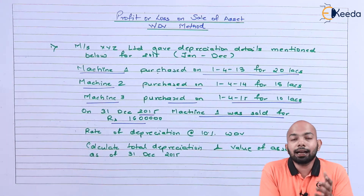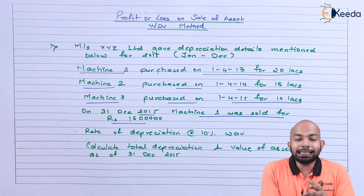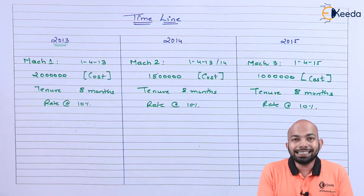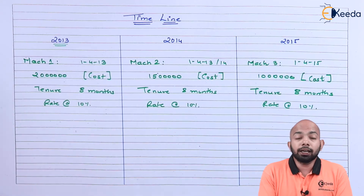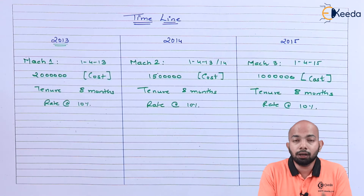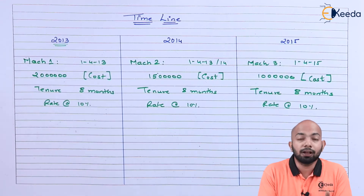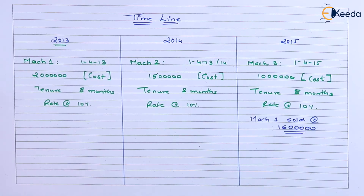We'll be preparing the timeline first and understanding how these details come up in a structured, ascending format. We have figured out the timeline details, and this timeline includes the purchase transactions. We also need to add the sale transaction — Machine 1 purchased for 20 lakhs was sold on 31st December 2015 for 16 lakh rupees. Once we have that complete timeline, we'll go ahead with the working for each machine and understand how the calculation is done under the written down value method.